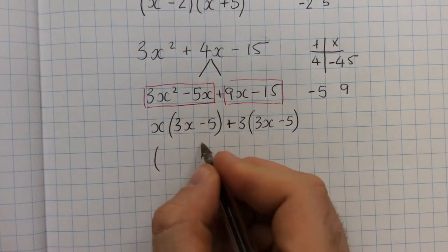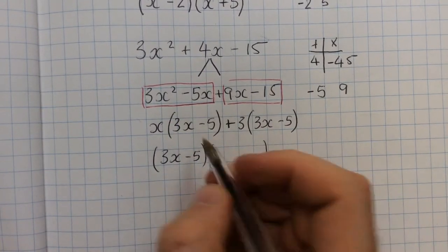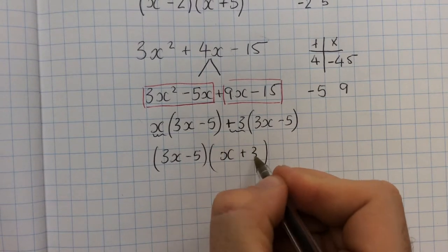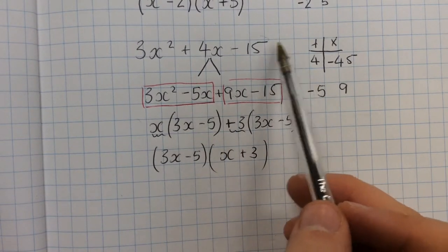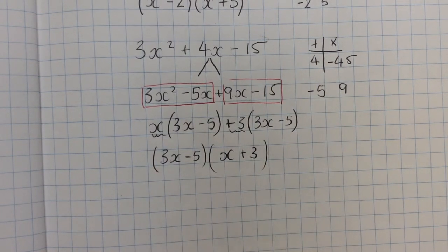And then that tells me our two final brackets are this repeated 3x minus 5, and the other bracket is formed of whatever's outside of the bracket, so x plus 3. Again, there's no equals on the end of this question, so it is just factorising. We are just stopping at the brackets, and that is the end of the question.